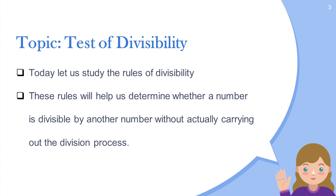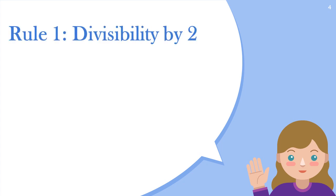These rules will help us determine whether a number is divisible by another number without actually carrying out the division process. Let us have a look at different divisibility tests. Rule number one: divisibility by two. Any number with zero, two, four, six, or eight at the unit place is divisible by two.